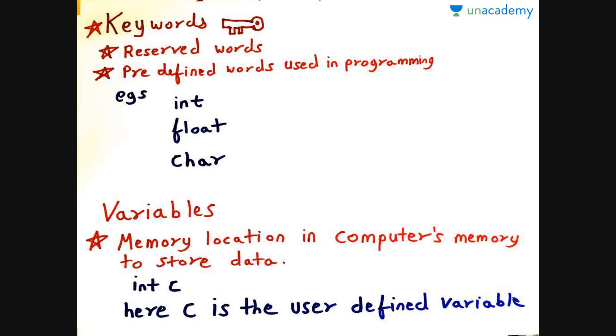Examples are int, float, char. Now int is used to store the integers, whereas float is used to store the decimal numbers, whereas char, just as its name suggests, is used to store characters.